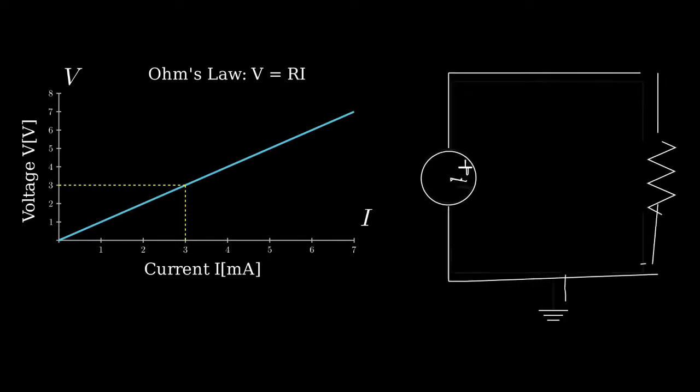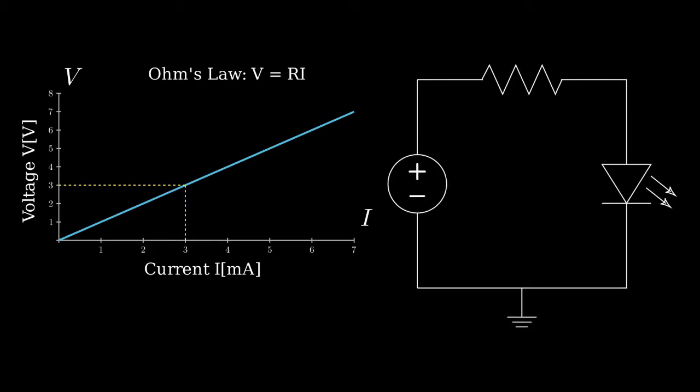To relate this back to our flashlight circuit, let's add the LED too and see what happens. Let's try a voltage of 3 volts with a power supply. We see the current moving through the circuit. If we increase the voltage to 5 volts, then the current gets faster. The slope of the line between these two points is the resistance of the resistor in the circuit.